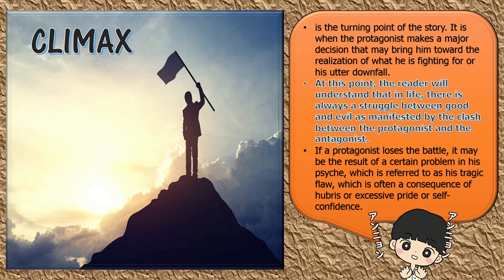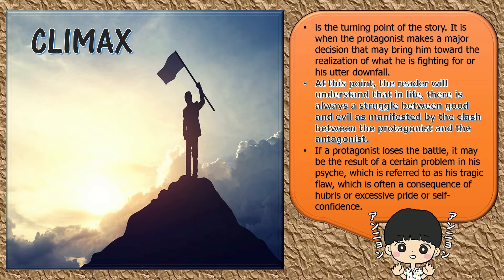We are now at the topmost part of Freytag's Pyramid, which is called the climax. The climax is the turning point of the story. It is when the protagonist makes a major decision that may bring him toward the realization of what he is fighting for, or his utter downfall. At this point, the reader will understand that in life there is always a struggle between good and evil, as manifested by the clash between the protagonist and the antagonist. If a protagonist loses the battle, it may be the result of a certain problem in his psyche, referred to as his tragic flaw — which is often a consequence of hubris, or excessive pride or self-confidence.